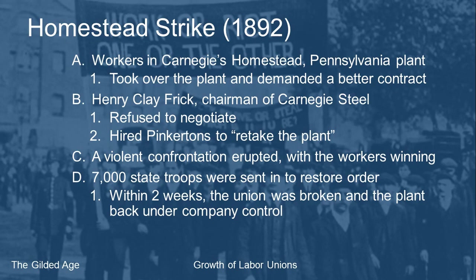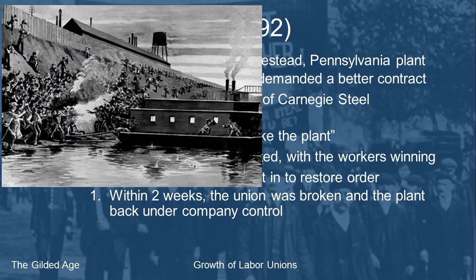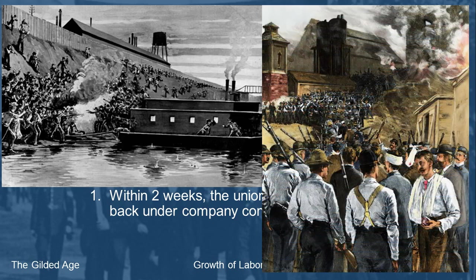The union was broken, the plant returned to company control, and workers who had participated in the strike actually ended up making less money afterward than before the strike started — an absolute disaster for the union. It was also a public relations nightmare for Carnegie. Images from this event show the Pinkertons trying to come off the barges with workers firing back, and later the Pinkertons having to march through the crowd.